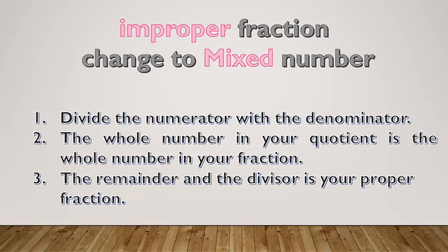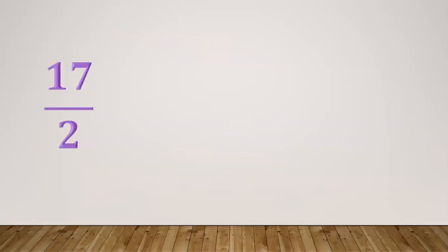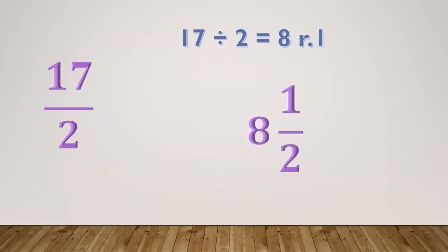We can also change from an improper fraction to a mixed number. First, divide the numerator by the denominator. The whole number in your quotient is the whole number of the mixed number. The remainder over the divisor is your proper fraction. For example, 17/2: divide 17 by 2 equals 8 remainder 1. So 8 is the whole number, 1 is the numerator, and copy the denominator 2. The mixed number is 8 and 1/2.